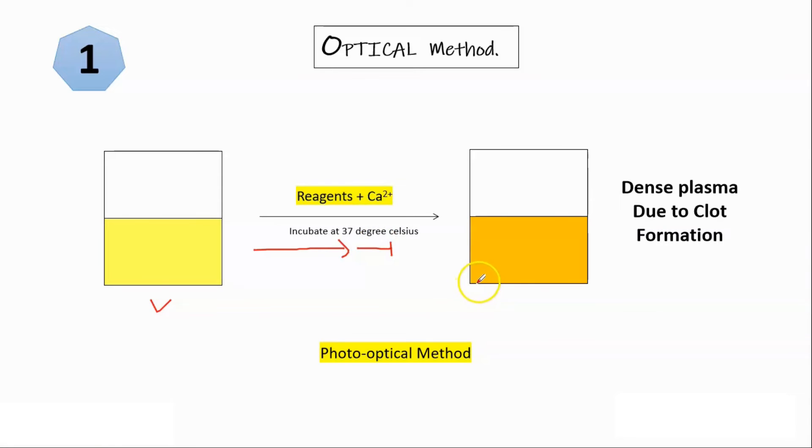After some time you will see the clot, clot or fibrin started to form. And it is simple science that after the clot formation or after the fibrin thread formation the solution or the plasma becomes optically dense. So due to this higher optical density the auto analyzers can calculate amount of fibrin formed. Thereby we will get the concentration of fibrinogen.